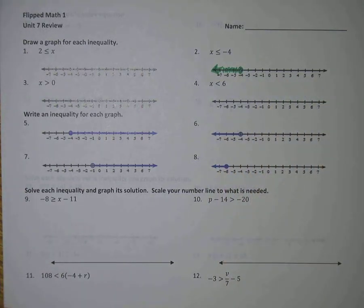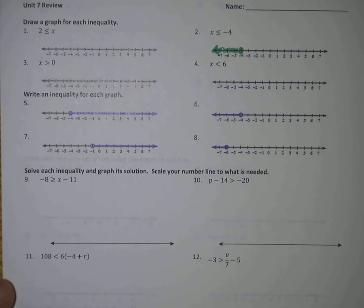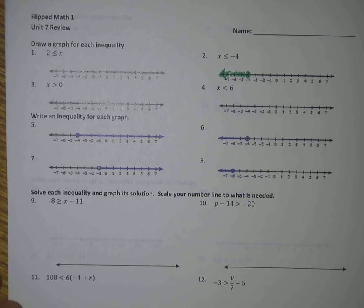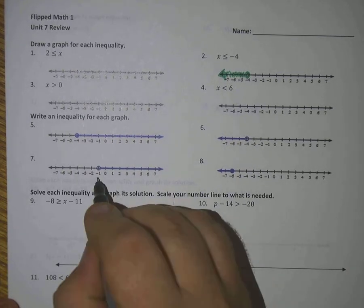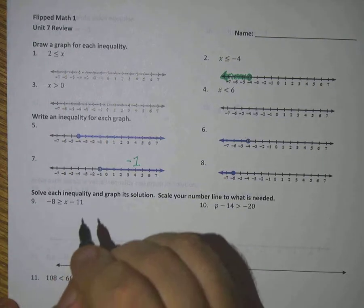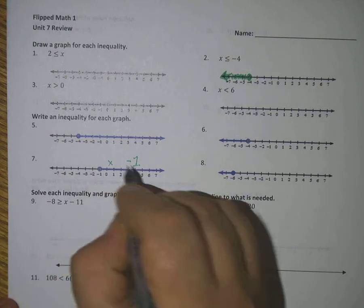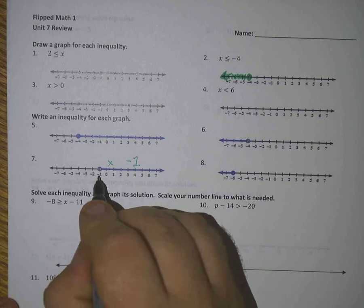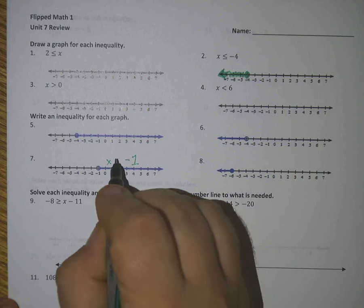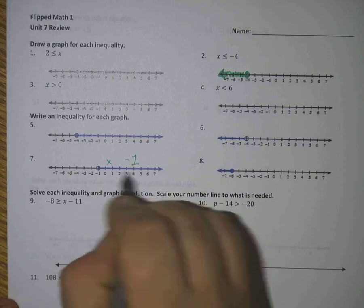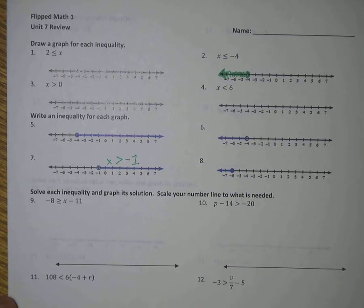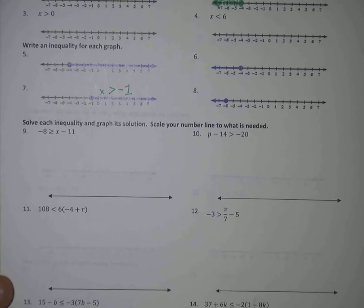That will not receive credit. In the next four, you're going to be writing an inequality for each graph. All you have to do is look at the picture. For number 7, negative one is the point in question, so x is going to be something related to negative one. It's an open circle, so there's no line under the symbol, and we're looking at numbers greater than negative one.